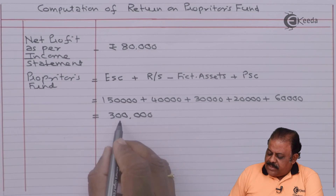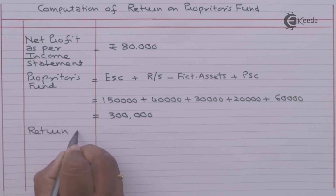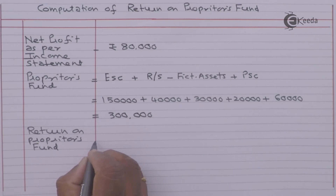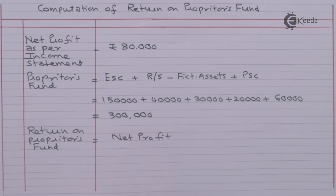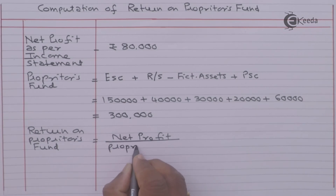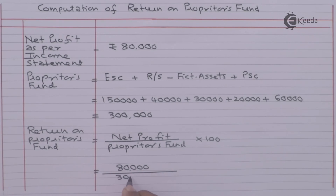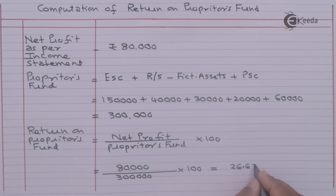Proprietors fund is rupees 3 lakhs. Net profit available for shareholders is rupees 80,000 divided by proprietors fund rupees 3 lakhs, multiplied by 100. Therefore, the return on proprietors fund ratio is 26.67 percent.